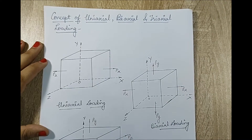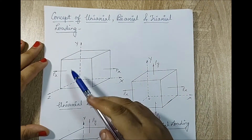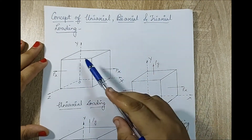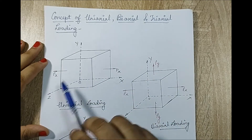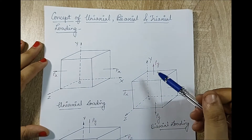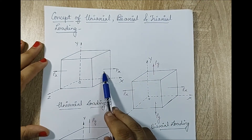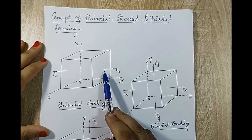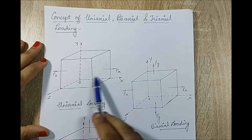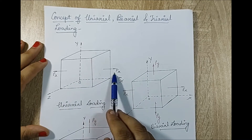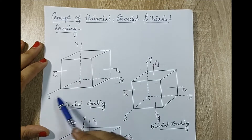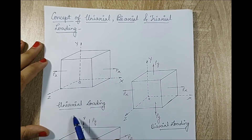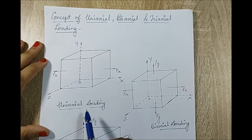Let's look at these figures first. If you see the first figure, this is a cube drawn extended along the x, y and z axes. If you have a load of any type — tensile or compressive — acting along any one axis, say x, y or z, then it will be called uniaxial loading.